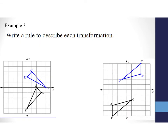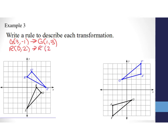Next, we write a rule that maps the pre-image onto the image. For triangle GR, G started at (3, -1) and G prime is at (1, 3) — the numerals switched spots. R was at (0, 2) and R prime is at (2, 0) — again the numerals switched. Because we are switching numerals, this tells me we are doing a 90-degree rotation about the origin.